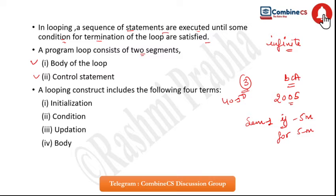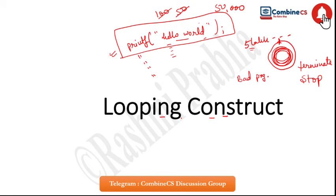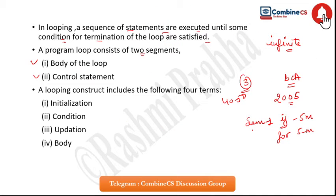Why? Because they were not focusing on concepts. If you have a loop, you must know how to write theory questions — because if you have 5 marks or 7 marks in a theory exam, you need to answer those too. In practicals you write programs, but you must know what looping is. A program loop consists of 2 segments: body of the loop and control statement.